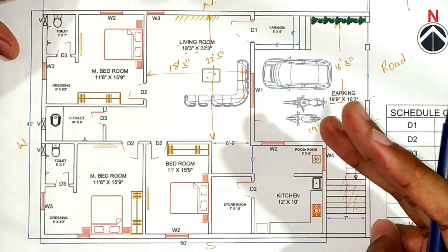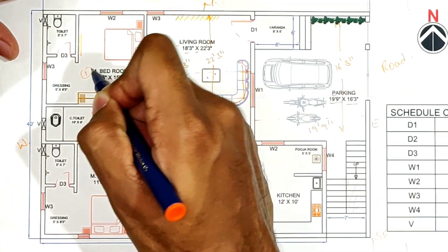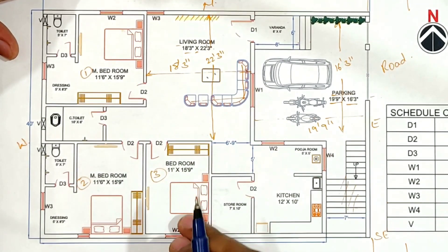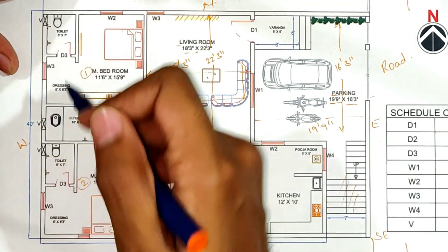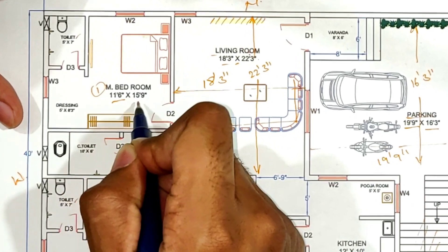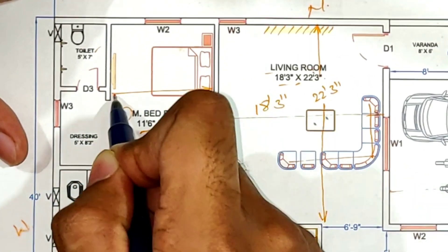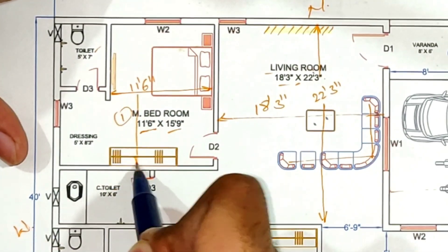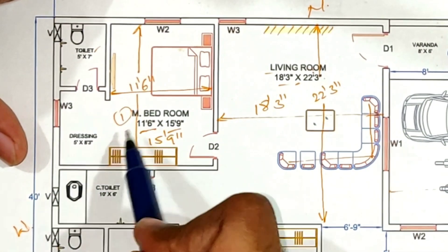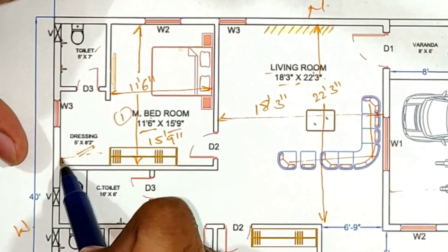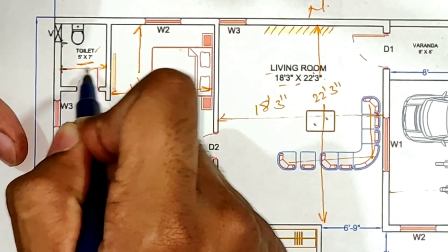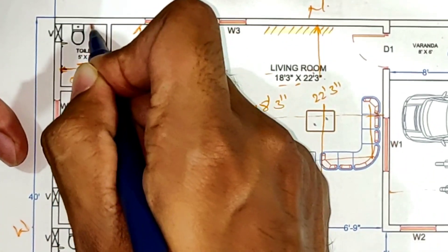For this plan I have to provide a total of 3 bedrooms. This is the first master bedroom and this is the second master bedroom. The third bedroom is a normal one. We have to provide a toilet in each bedroom. The master bedroom dimension is 11 feet 6 inches by 15 feet 9 inches. We have to provide a dressing room and makeup set. The toilet area size is 5 feet by 7 feet.